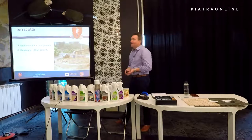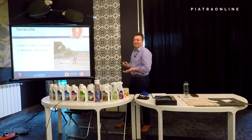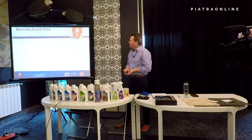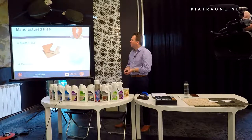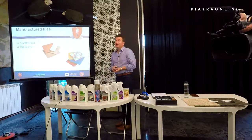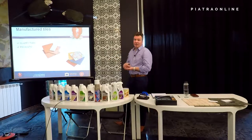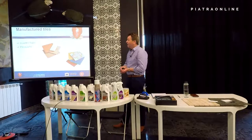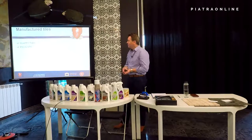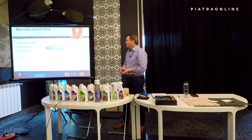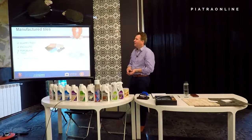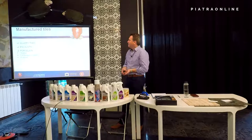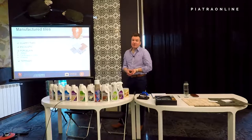Then we have things like terracotta. There are a lot of tiles made from clay — you have two different types: low-frost and handmade high-frost terracottas. Then you have manufactured tiles such as quarry tiles and encaustic tiles, which you have a lot of here — a cement base with a clay slurry over the top using different pigments and minerals to get the patterns. Again they're very porous so they require quite a lot of attention. Then you have porcelain which comes in three categories: glazed, full-bodied unglazed, and polished.